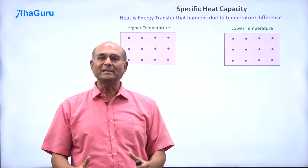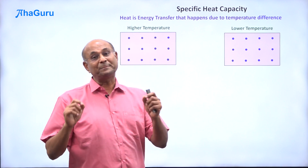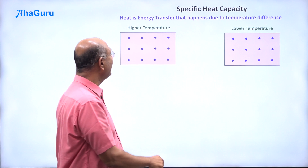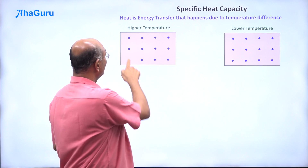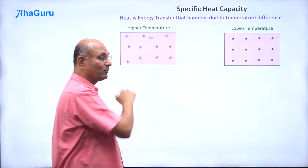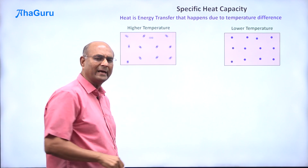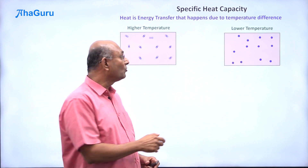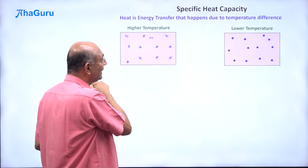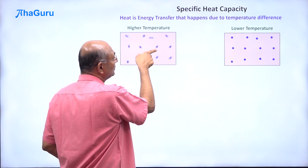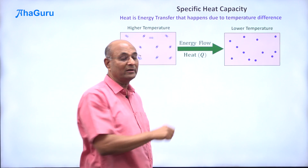We are now going to learn how to measure the quantity of heat and we are going to arrive at the concept of specific heat capacity. Heat is the energy transfer that happens due to temperature differences. Here I have a hotter object with higher temperature, so the molecules are jiggling around very rapidly. That is a lower temperature object, so the molecules are jiggling around quite slowly. If I now allow energy transfer between these two because of temperature differences, energy is going to transfer from the hotter object to the colder object. This energy flow is what we call heat.